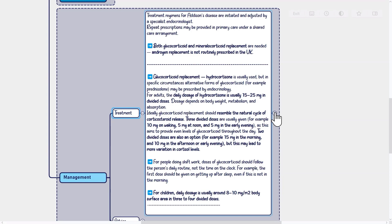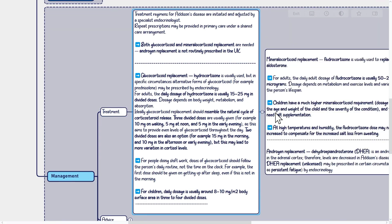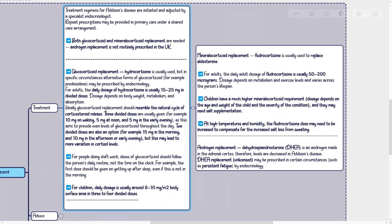For people doing shift work, doses of glucocorticoid should follow the person's daily routine rather than the clock — for example, the first dose should be given on getting up after sleep, even if this is not in the morning. For children, the daily dosage is usually around 8 to 10 mg/m² body surface area in 3 to 4 divided doses. Mineralocorticoid replacement: fludrocortisone is usually used to replace aldosterone. For adults, the daily dosage is usually 50 to 200 mcg, depending on metabolism and exercise levels.